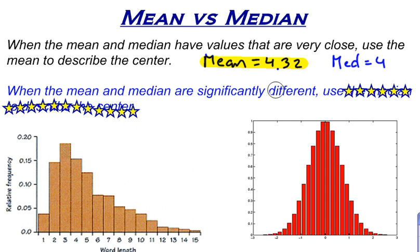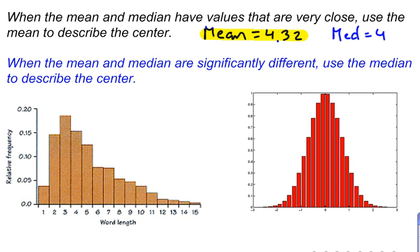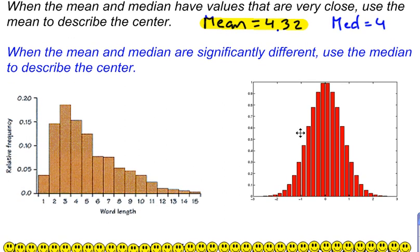Now when the mean and the median are significantly different from each other, we use the median to describe the center of the distribution. So if our mean was 4.32 and our median was 8, I would say those are significantly different, and I would use the median to describe our center. Let me show you a couple of distributions to give you an idea of why we use the median when they are different and the mean when they're about the same.